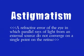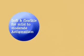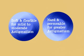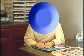There are two different types of contact lenses that correct for astigmatism: a very soft and flexible contact lens used for mild to moderate astigmatism, or a permeable, harder contact lens which corrects for greater amounts of astigmatism. I'd like to talk to you about the soft contact lenses that correct for astigmatism.